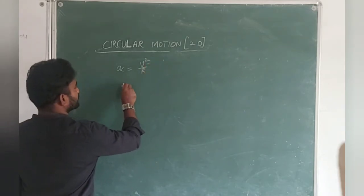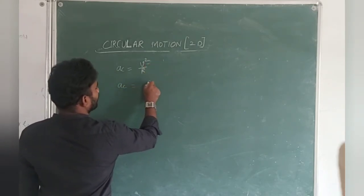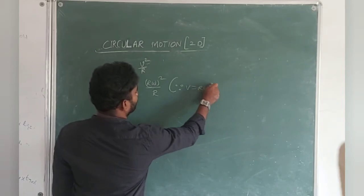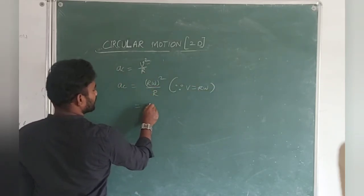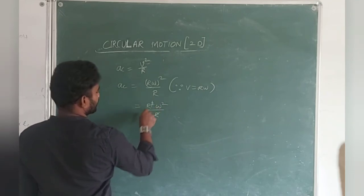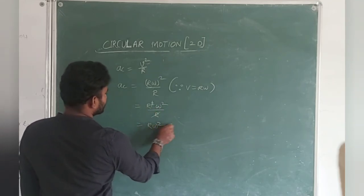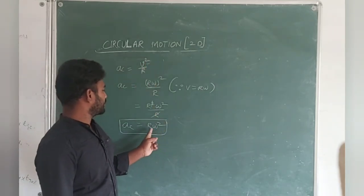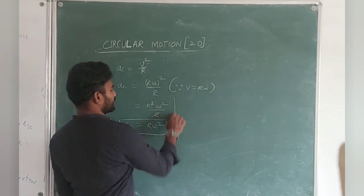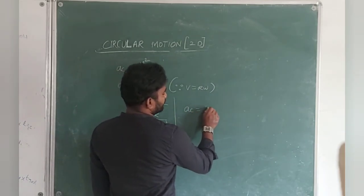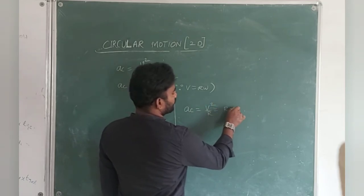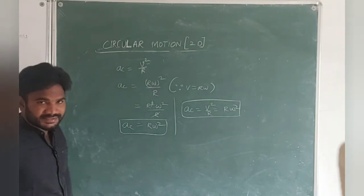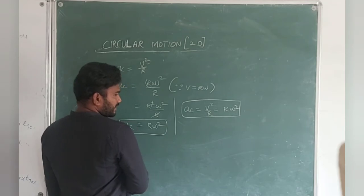Since V = Rω, substituting: AC = (Rω)²/R = R²ω²/R = Rω². So there are two formulas for centripetal acceleration: V²/R and Rω². You can use either formula depending on the situation.